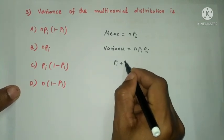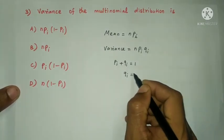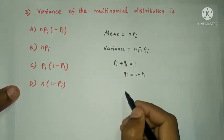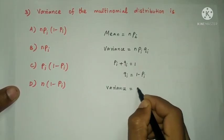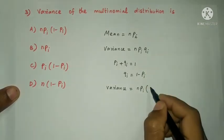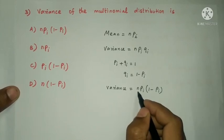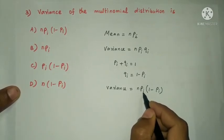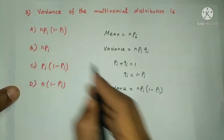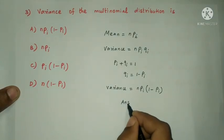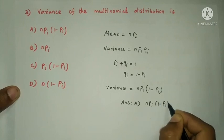Since π + q = 1, q = 1 − π. Therefore, the variance is n × π × (1 − π). So option A is the answer: n × π × (1 − π).